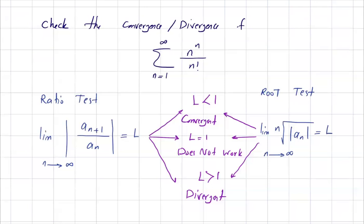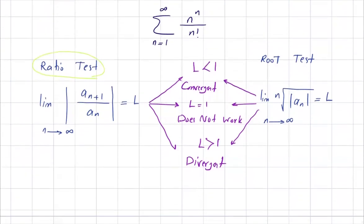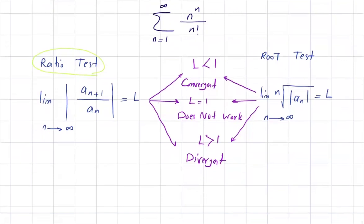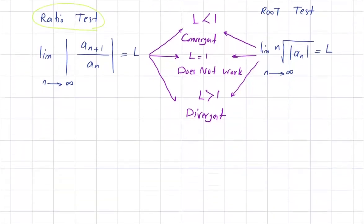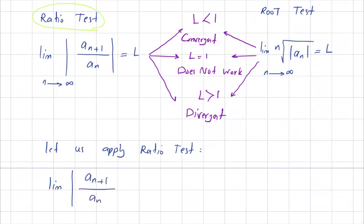For this series, you can use either the root test or the ratio test. Let us apply the ratio test. We are interested in finding the limit of the absolute value of a_{n+1} divided by a_n as n goes to infinity.